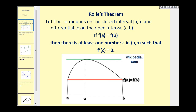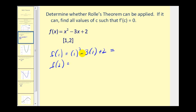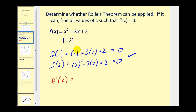Let's give it a try. Determine whether Rolle's Theorem can be applied. If it can, find all values of c where the derivative is equal to zero. The first step is to determine if f of one is equal to f of two. If these aren't equal, we cannot apply Rolle's Theorem. Well, f of one equals zero, and f of two — four minus six plus two — is also equal to zero. So f of one equals f of two. This is a continuous differentiable function on this interval, so we can apply Rolle's Theorem. We'll find the derivative and set it equal to zero. The derivative would be two x minus three.